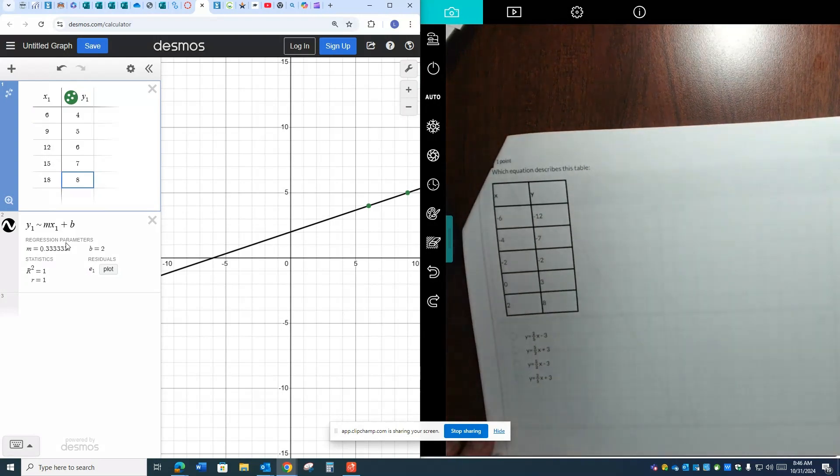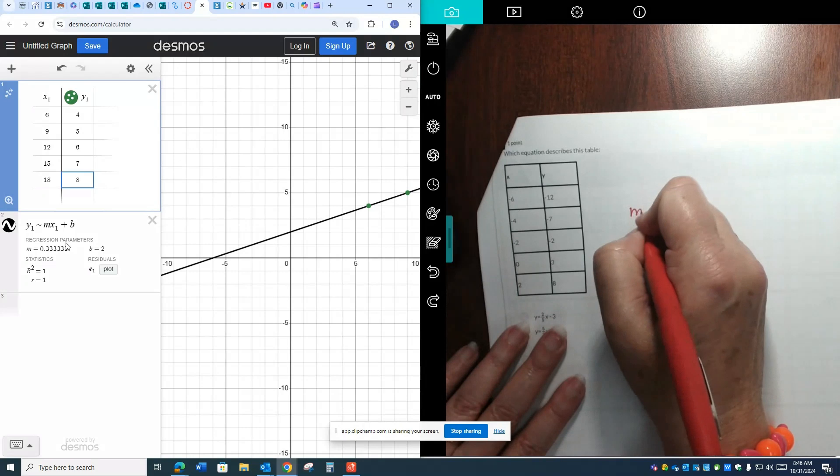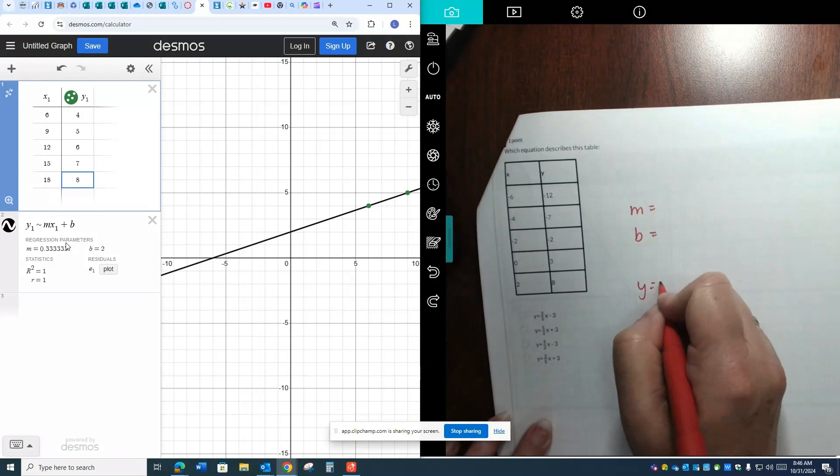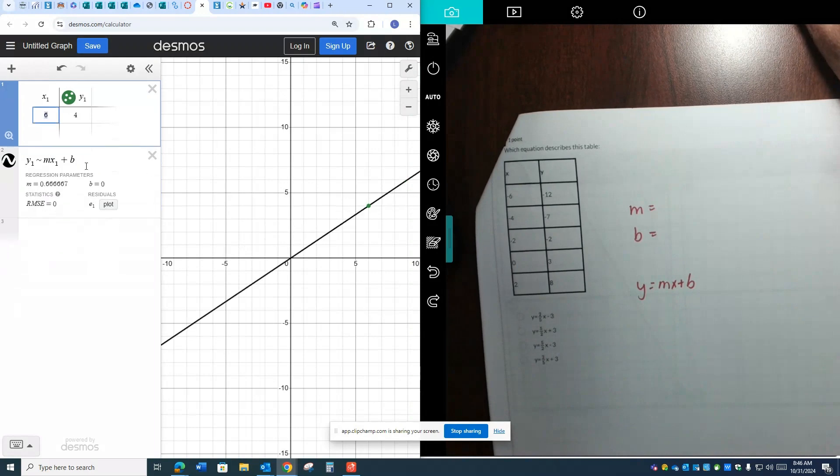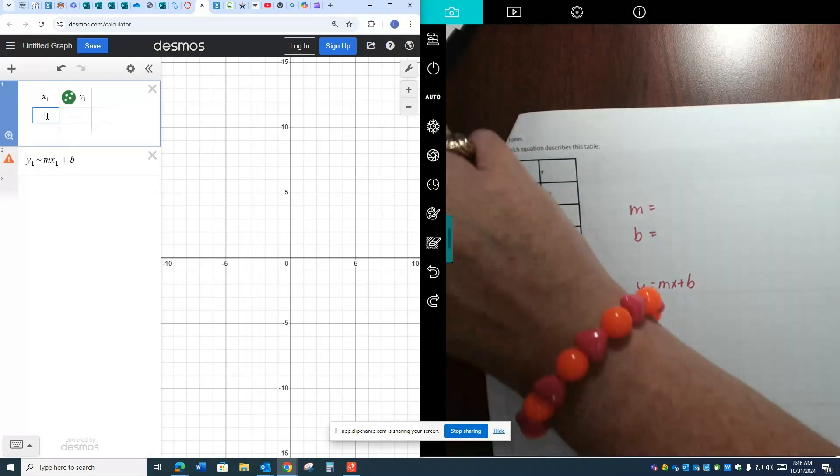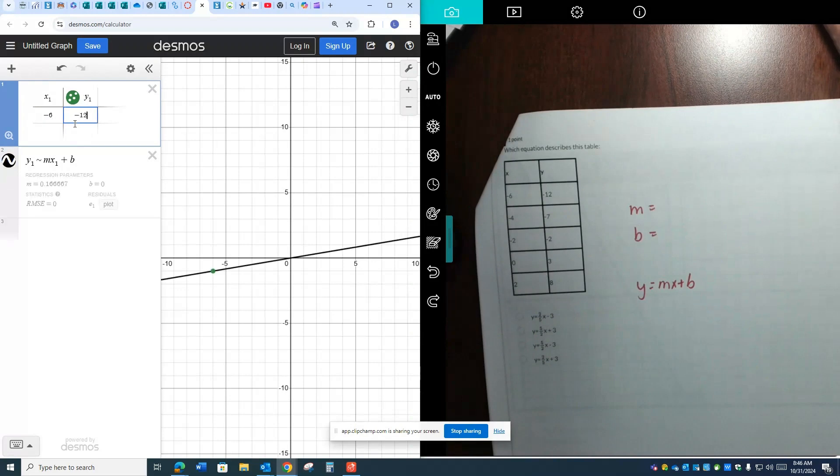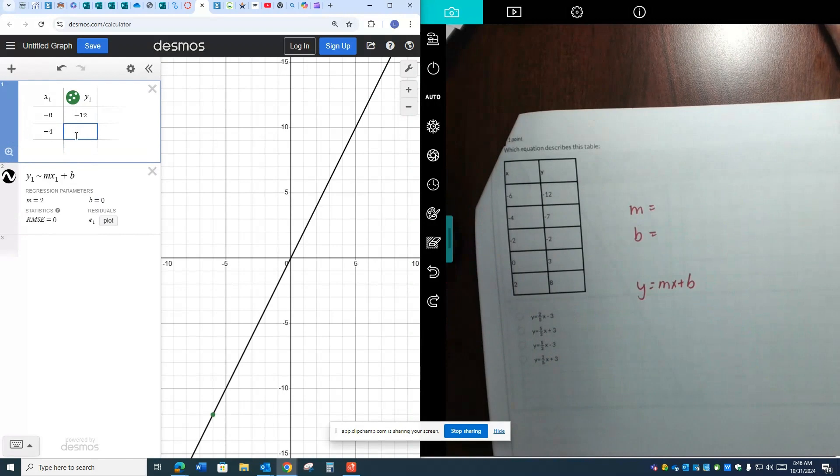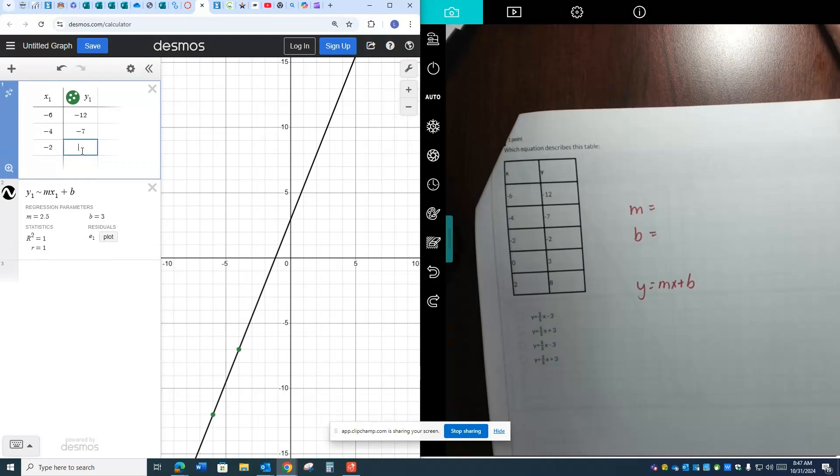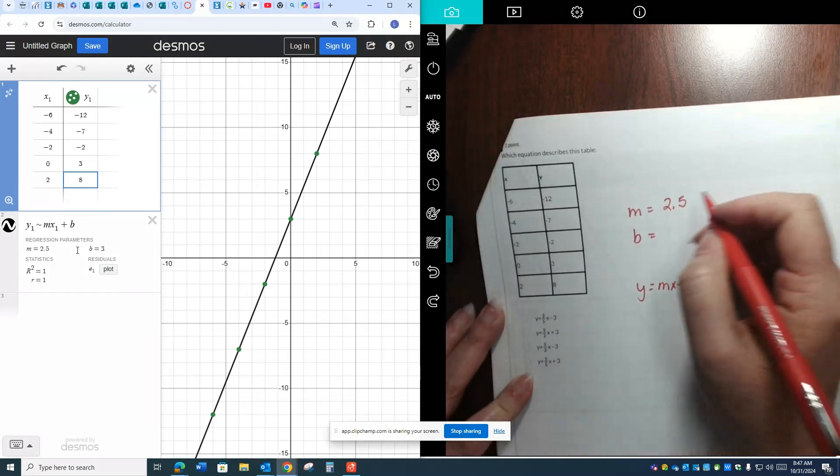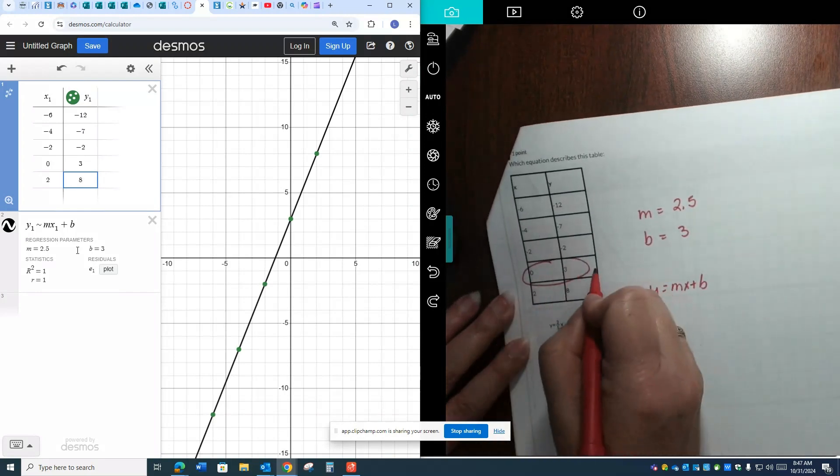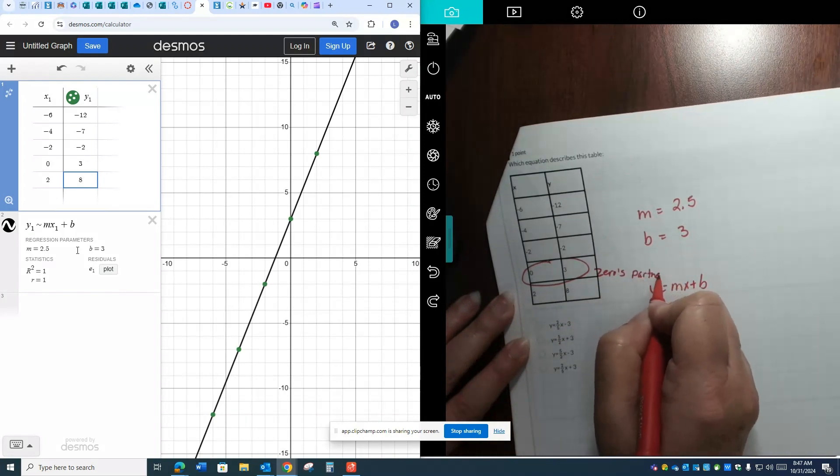Turn it over. Number 4. Which equation describes this table? So again, we're going to need to find the m and the b so that we can place it into this format. So I'm going to use my same setup over here. I'm going to delete the data. Don't delete the table altogether, and I'm going to put in the new data. Negative 6 is paired up with negative 12. Negative 4 is paired up with negative 7. Negative 2 is paired up with negative 2. And 0 is paired up with 3. And 2 is paired up with 8. And it tells me right here my m is 2.5. And my b is 3. I actually saw my b right here, 0's partner. But Desmos confirmed it. It is 3.